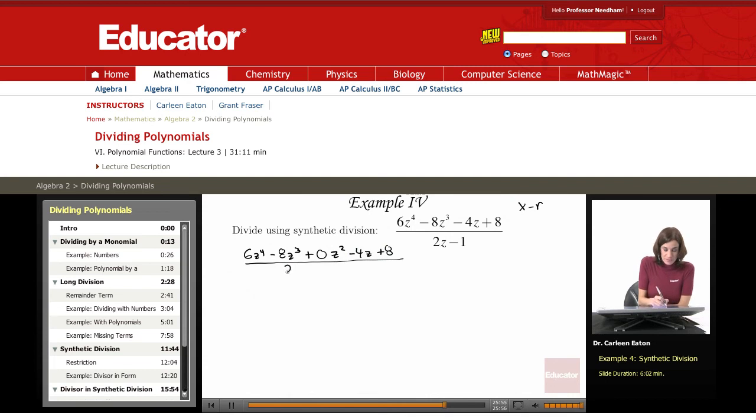Now the other problem I have is that this is not in the correct form. In order to have this z have a coefficient of one, I need to divide all the terms in the divisor and the dividend by 2. So I'm going to do that. Divide by 2. Divide each term by 2.